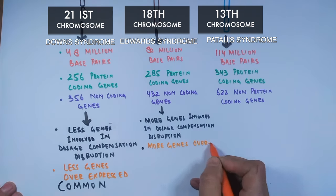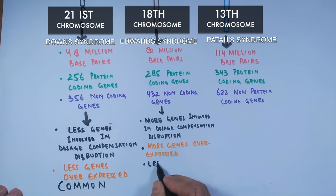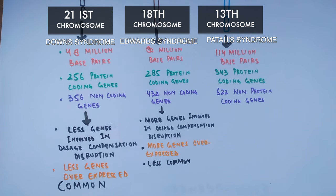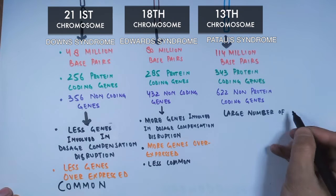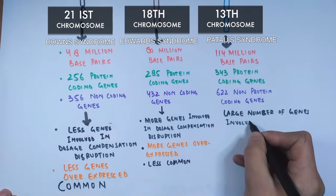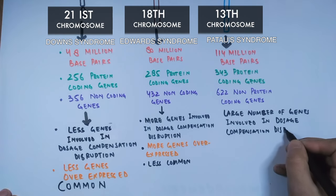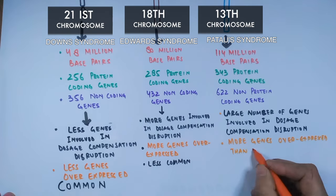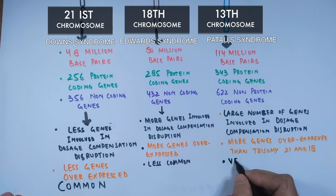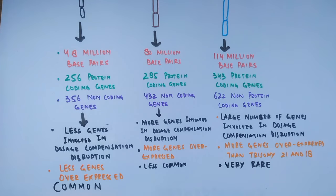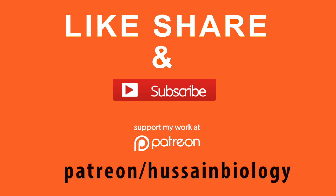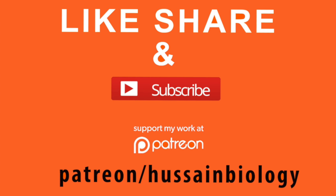With more genes affected, Edwards syndrome is less common than Down syndrome. Finally, in Patau syndrome, a large number of genes are affected in dosage compensation disruption because of the larger size of chromosome 13 — more genes are affected than in trisomy 21 or 18. That is why Patau syndrome is very rare. So this is all about trisomy and why some trisomies are common and others are rare. I hope you liked the video — if so, give it a thumbs up, consider supporting my work on Patreon, and make sure to subscribe. Thanks!